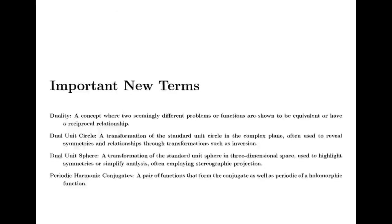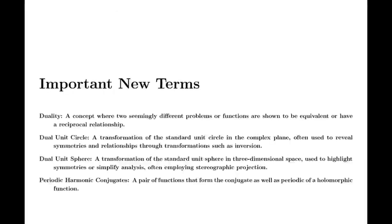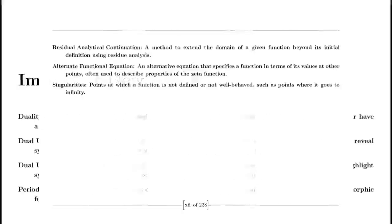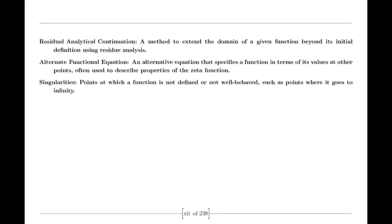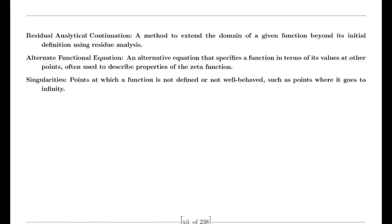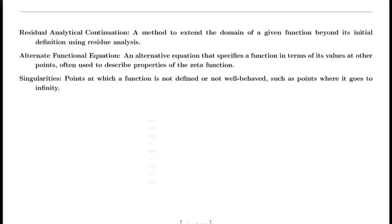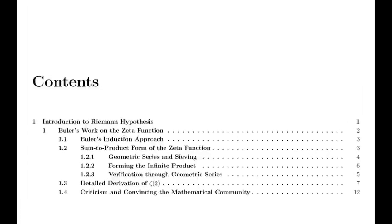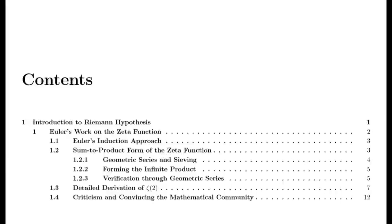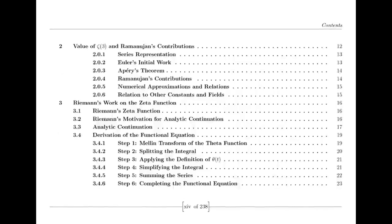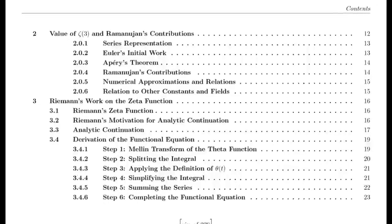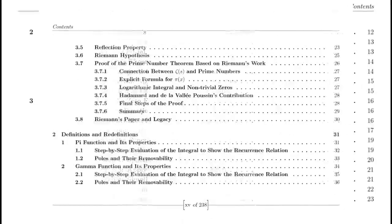Moving to the 19th century, we encounter Bernhard Riemann, who expanded our understanding of complex functions. Riemann introduced the concept of analytic continuation, which allowed for the extension of functions beyond their initial domains. He extended the Riemann zeta function — initially defined only for complex numbers with real parts greater than 1 — to the entire complex plane except for s = 1, where it has a simple pole. This was a crucial advancement in complex analysis.